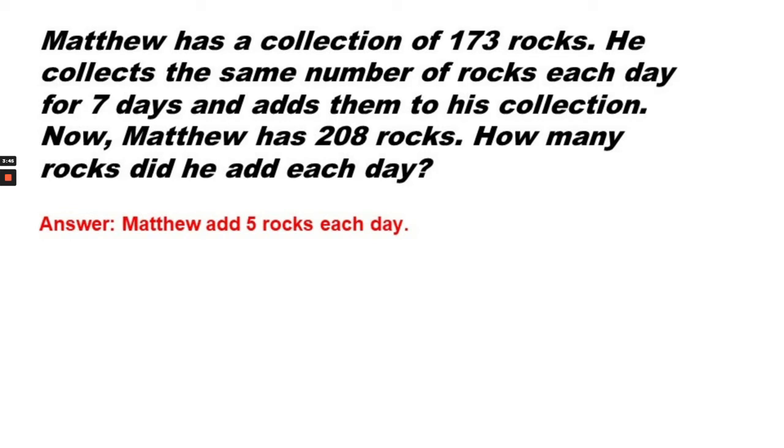Matthew has a collection of 173 rocks. He collects the same number of rocks each day for seven days and adds them to his collection. Now Matthew has 208 rocks. How many rocks did he add each day? Matthew added five rocks each day. We know that because we found the difference between 208 and 173, and that difference was 35. That's the number that he collected. He collected those over seven days, and seven goes into 35 five times.